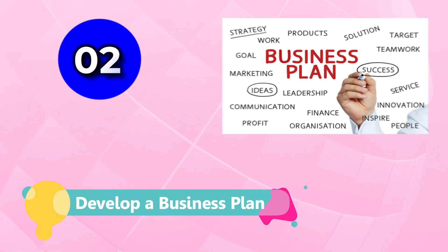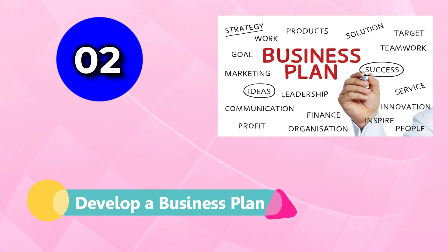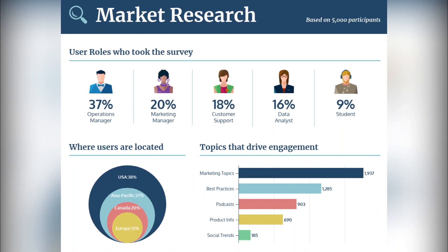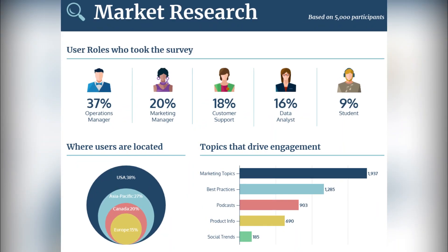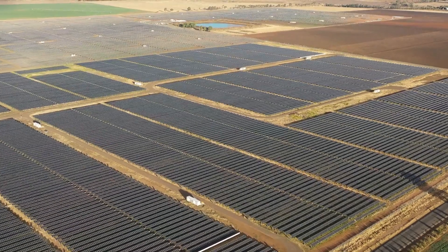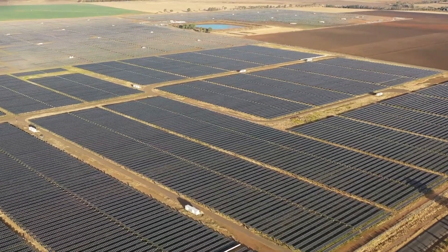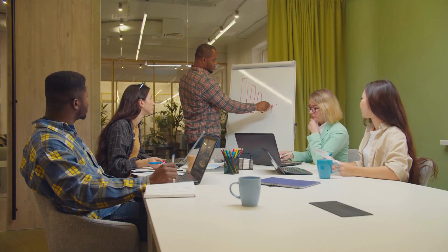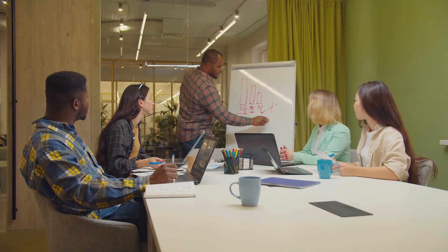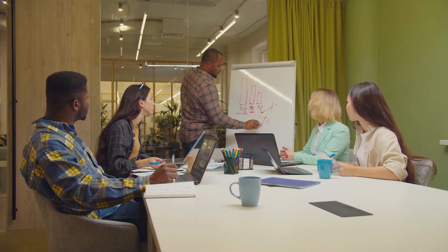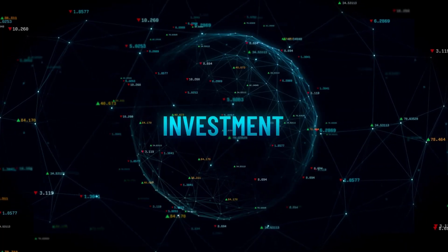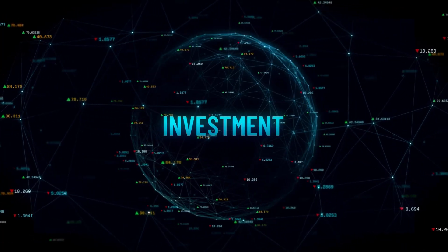Step 2: Develop a Business Plan. Once you have conducted your market research, it is time to develop a detailed business plan for your solar farm. This plan should outline the goals, objectives, and strategies for your project, as well as the estimated cost and potential return on investment.